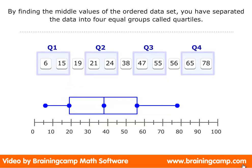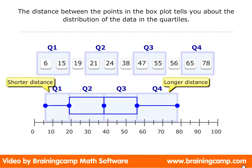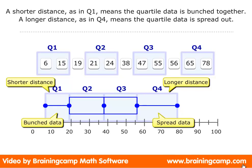By finding the middle values of the ordered data set, you have separated the data into four equal groups, called quartiles. The distance between the points in the box plot tells you about the distribution of the data in the quartiles. A shorter distance, as in Q1, means the quartile data is bunched together. A longer distance, as in Q4, means the quartile data is spread out.